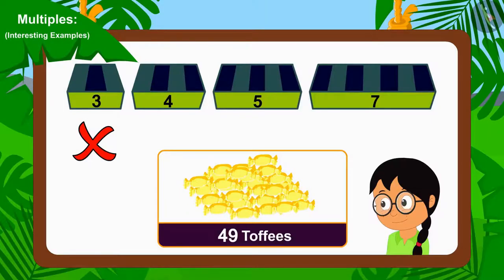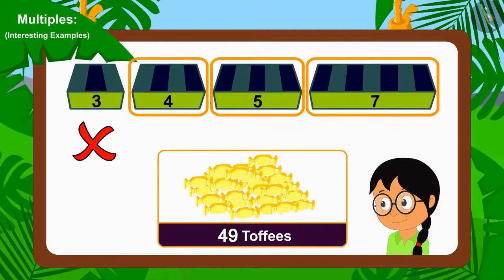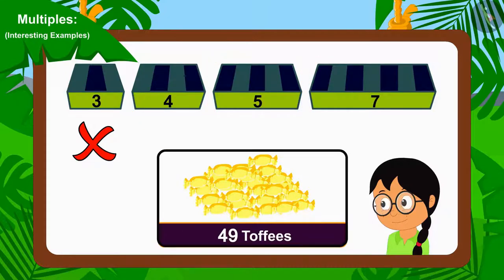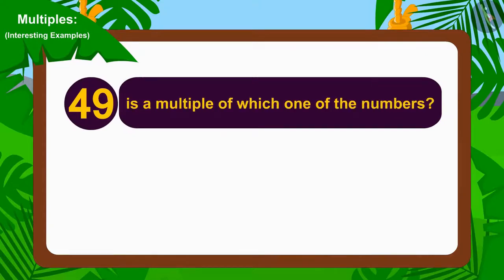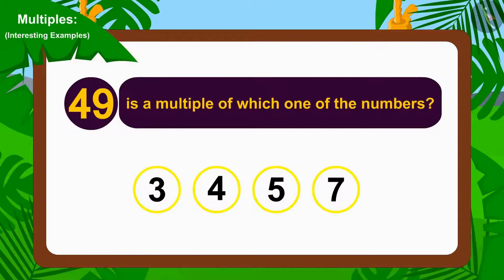This means which group will Meenu have to use to distribute the 49 toffees equally? To find this out, we just have to find that 49 is a multiple of which one of the numbers? 3, 4, 5 or 7? Now, can you tell 49 is a multiple of which one of these numbers? If you want, you can stop the video and find the answer.